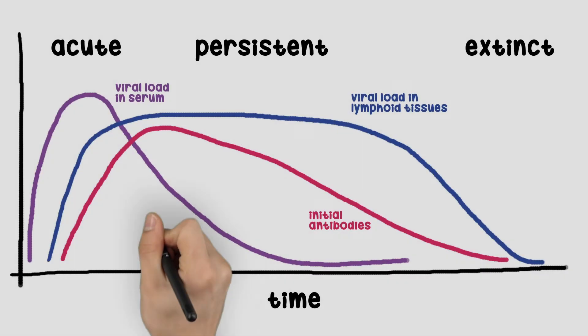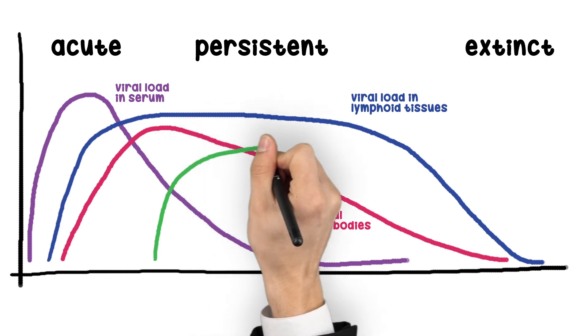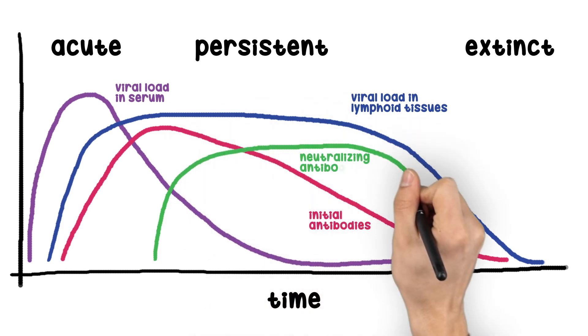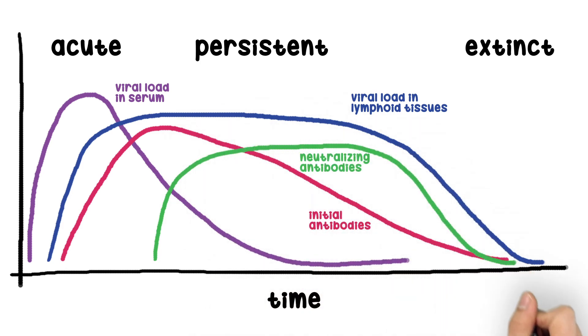Neutralizing antibodies appear later, approximately day 28 post infection onwards, and are important for clearing the virus.